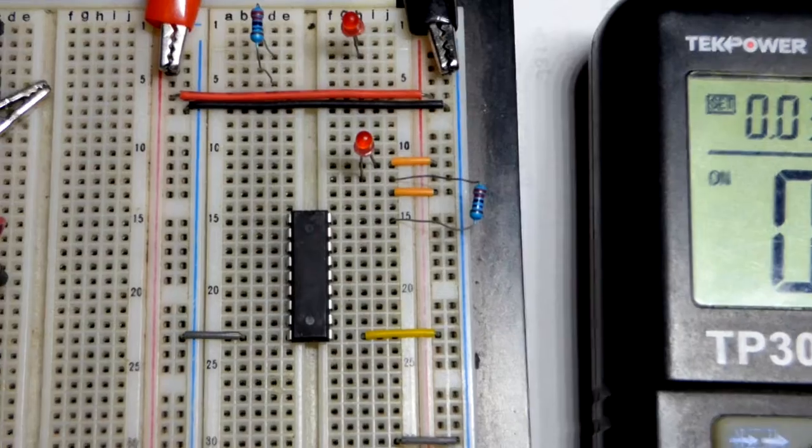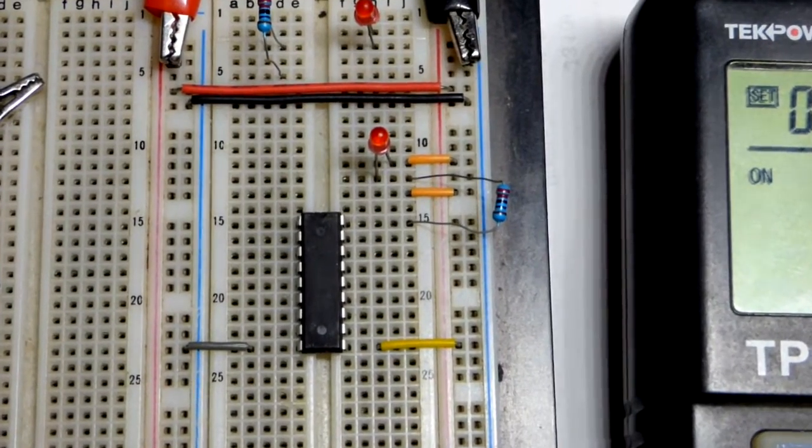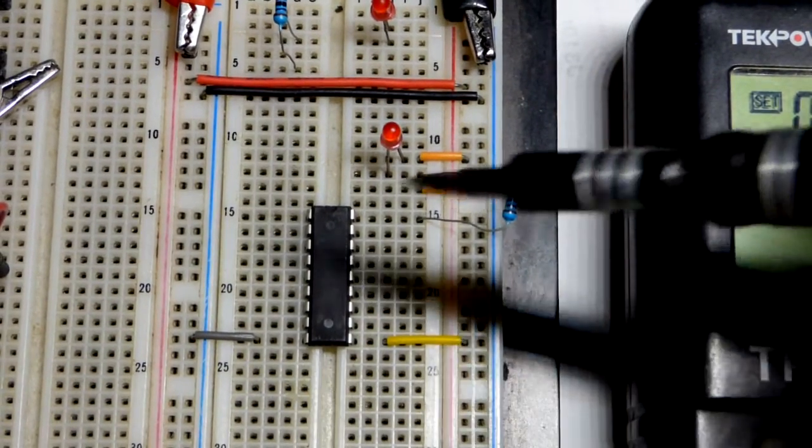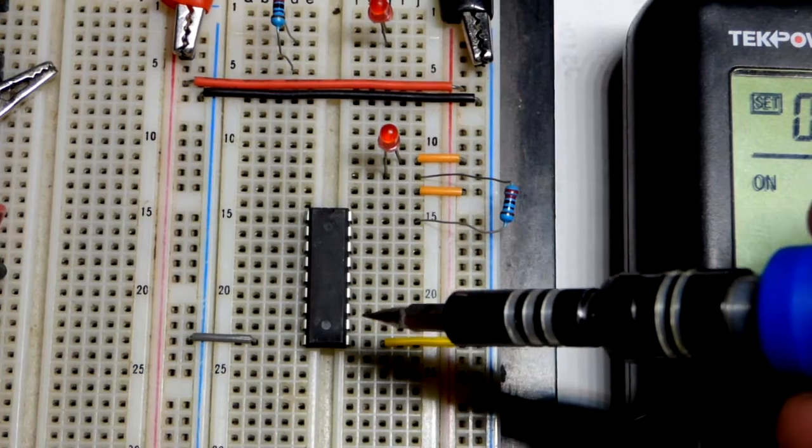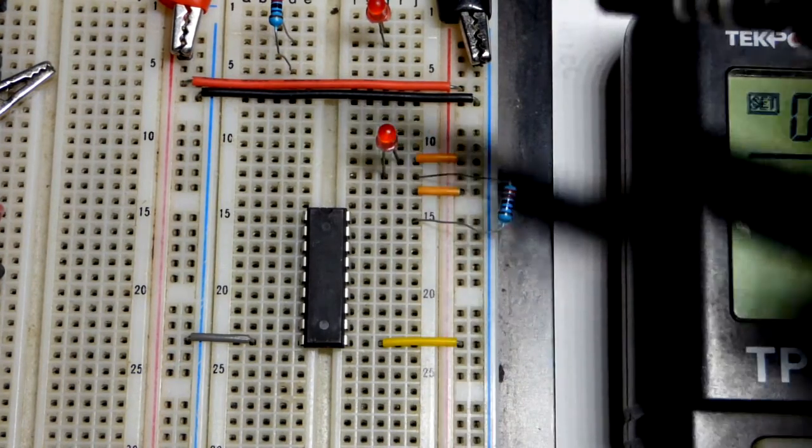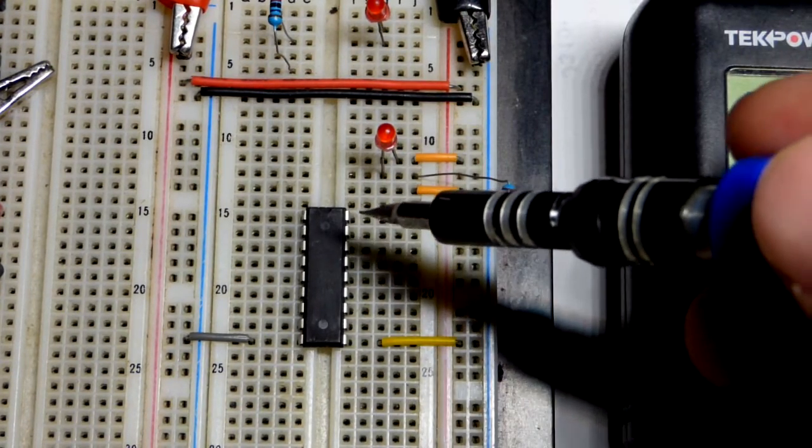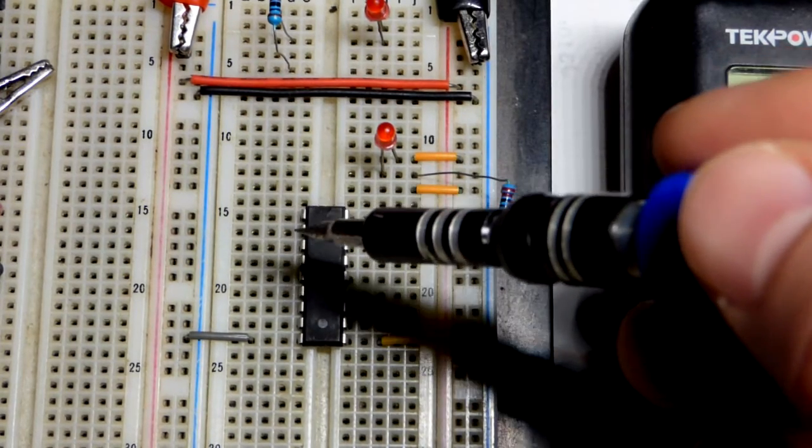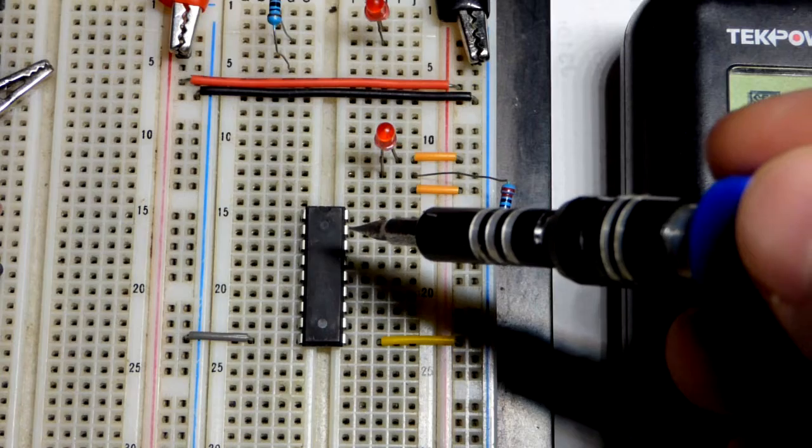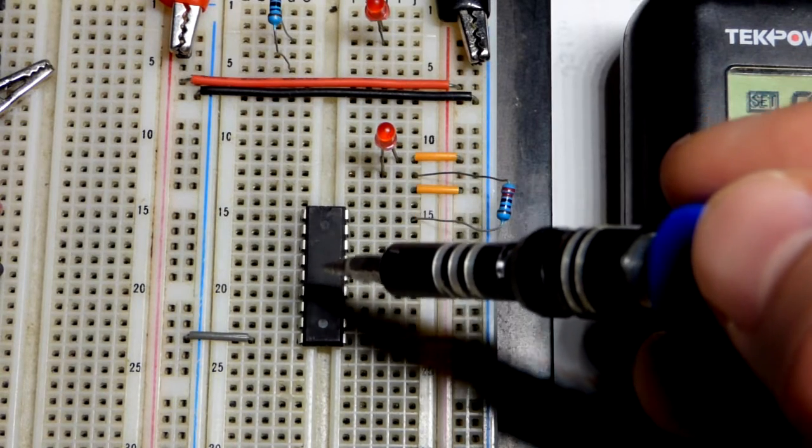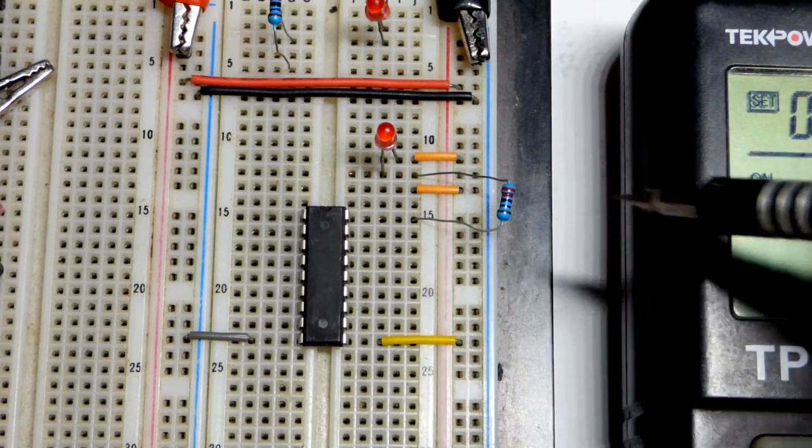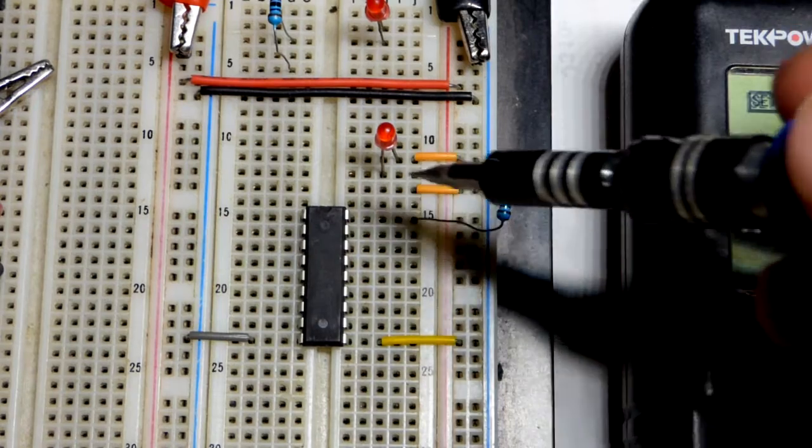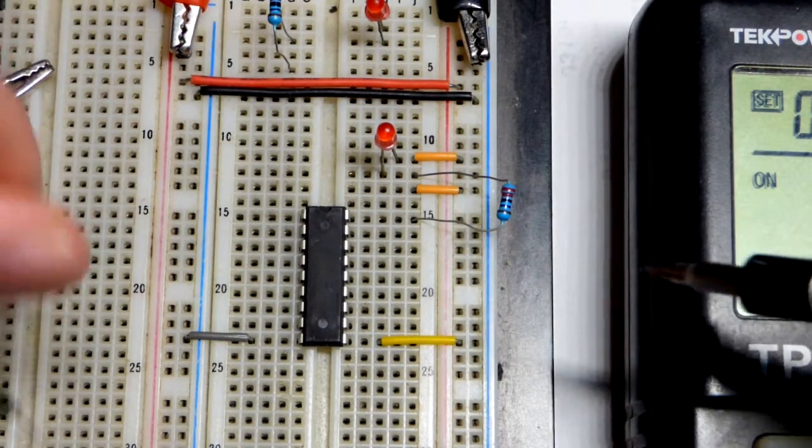The board is powered right now and what this is is eight Darlington pair transistors right there. This is the collector and that is the base of that top one right there. Again we got a base and a collector so all these are independent transistors, basically Darlington pairs. We will see, in fact we'll do that now.